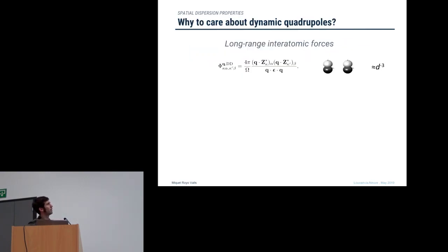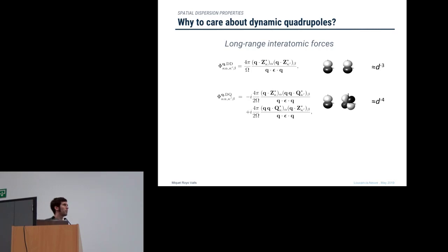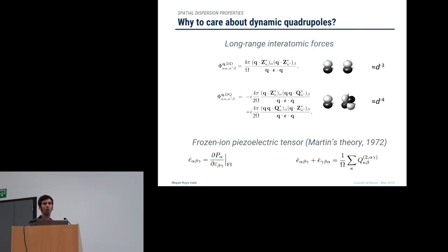Why do we need to care about these dynamical quadrupoles? First, they can be used to improve the description of long-range interatomic interactions in dynamical problems, which are currently described at the level of dipole-dipole electrostatic interactions. Having access to quadrupolar terms allows inclusion of dipole-quadrupole and quadrupole-quadrupole interactions in phonon calculations. Another application is in electromechanical couplings, as demonstrated by Richard Martin in 1972, who showed that the clamped-ion piezoelectric tensor can be calculated as a lattice summation of the dynamical quadrupoles.